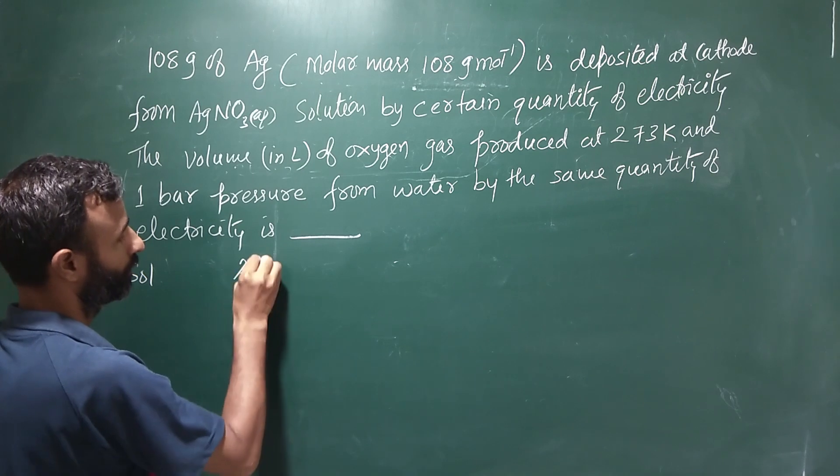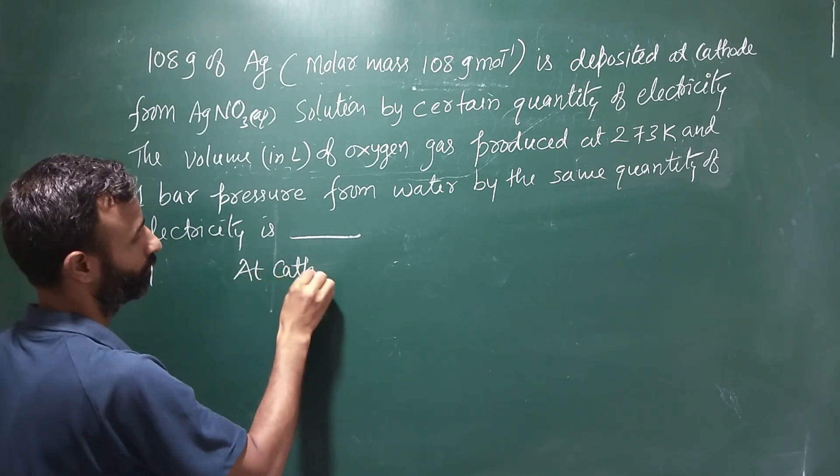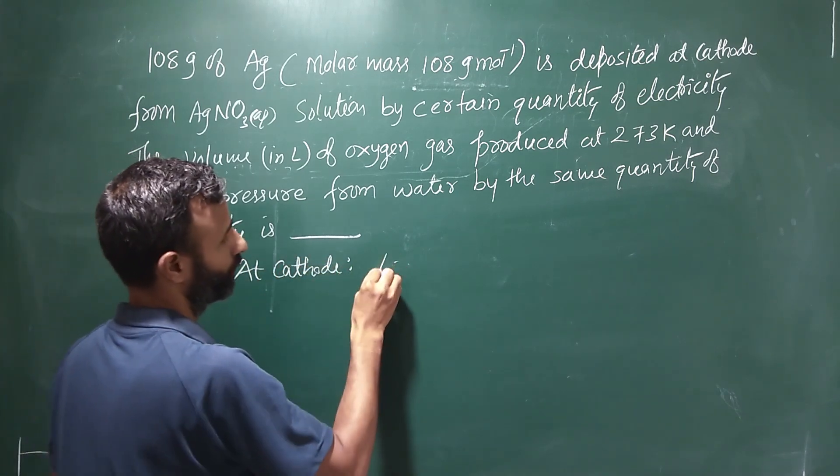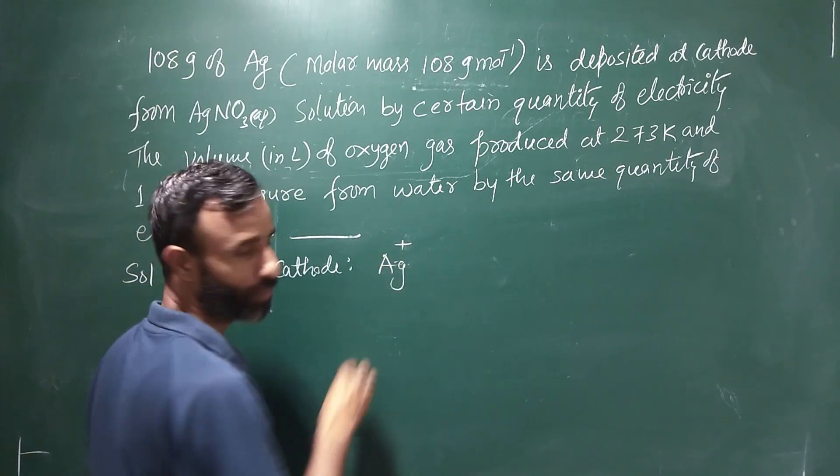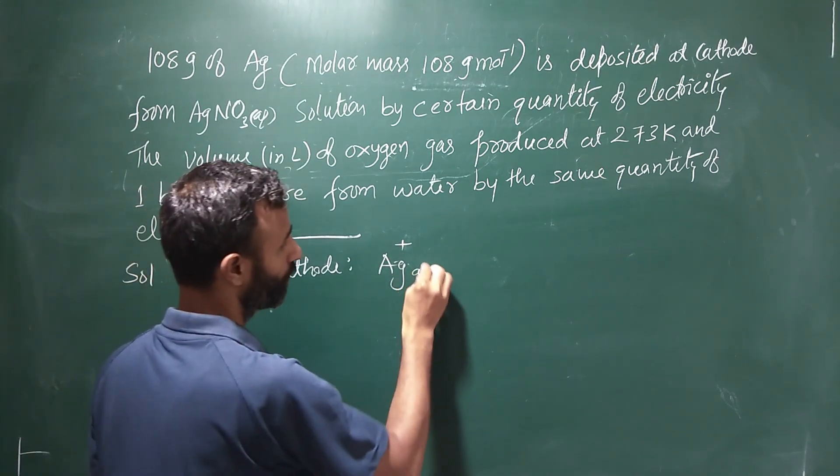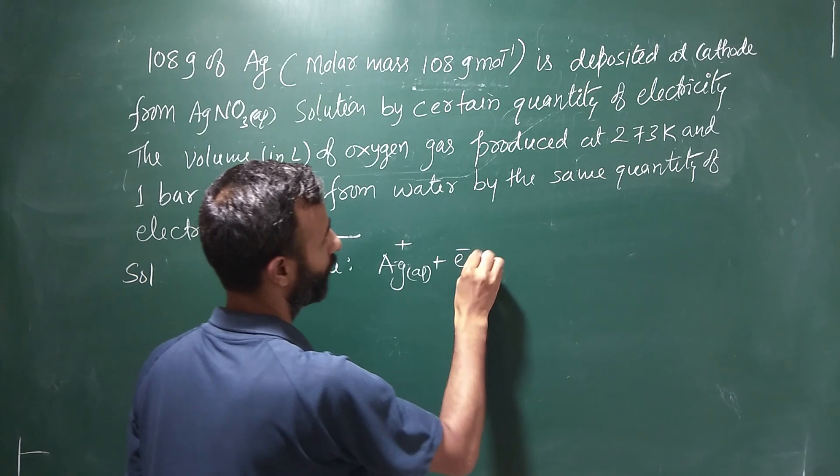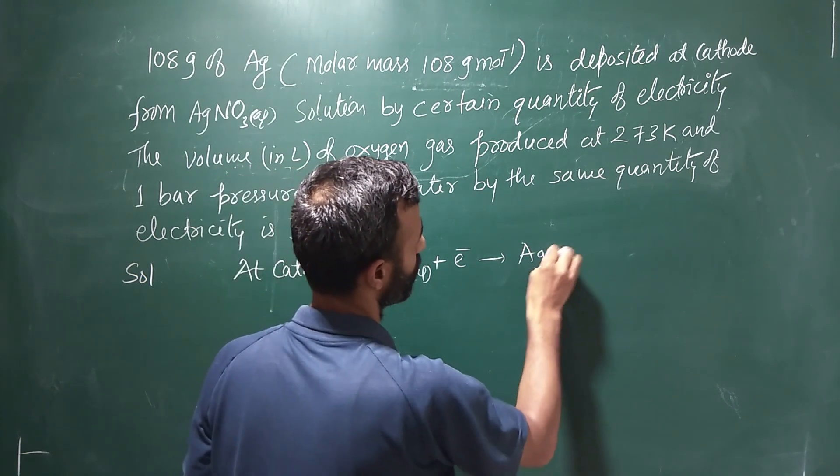You know, at cathode, in silver nitrate there is silver positive ions. Silver positive ions gain one electron to get silver.